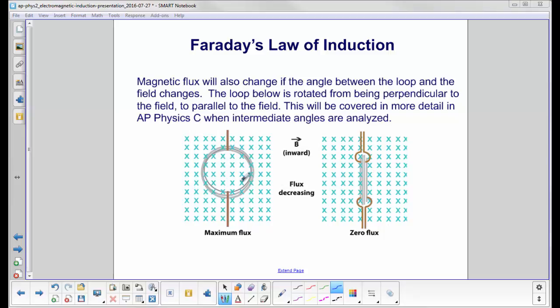So in this case you have a maximum flux. In this case, as you're rotating it, the flux starts decreasing until here you have a zero flux. We'll cover this in more detail in the AP Physics C course where we deal with these intermediate angles.